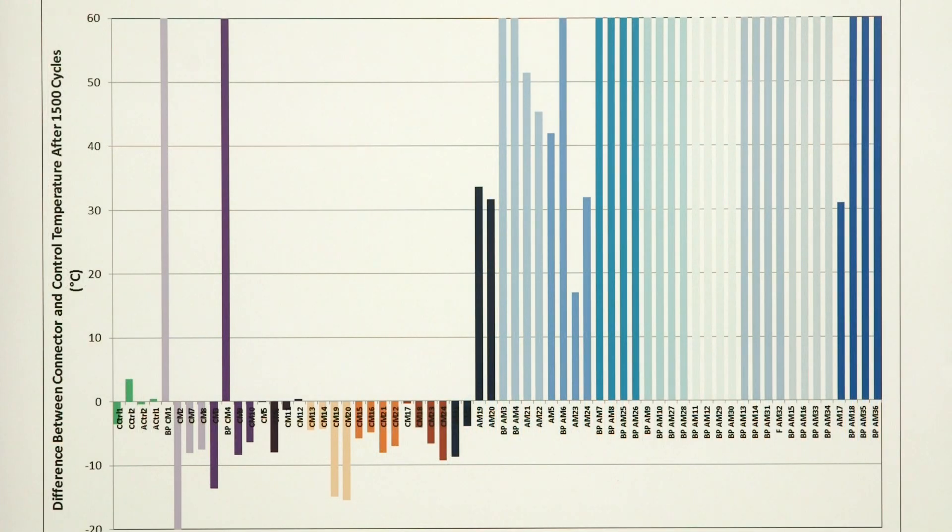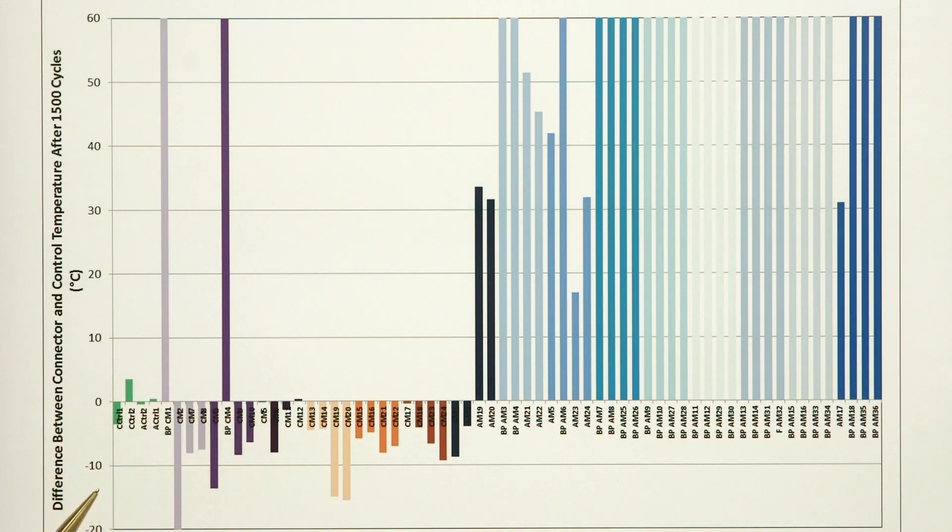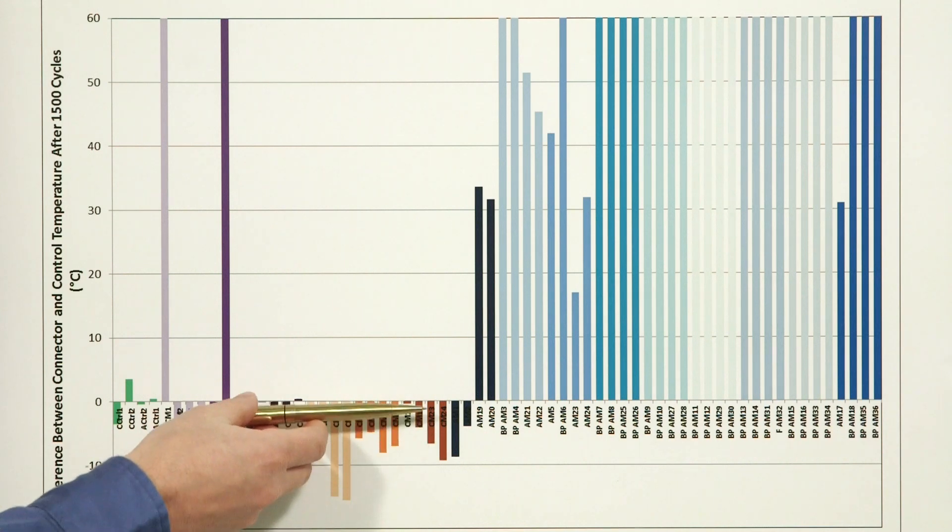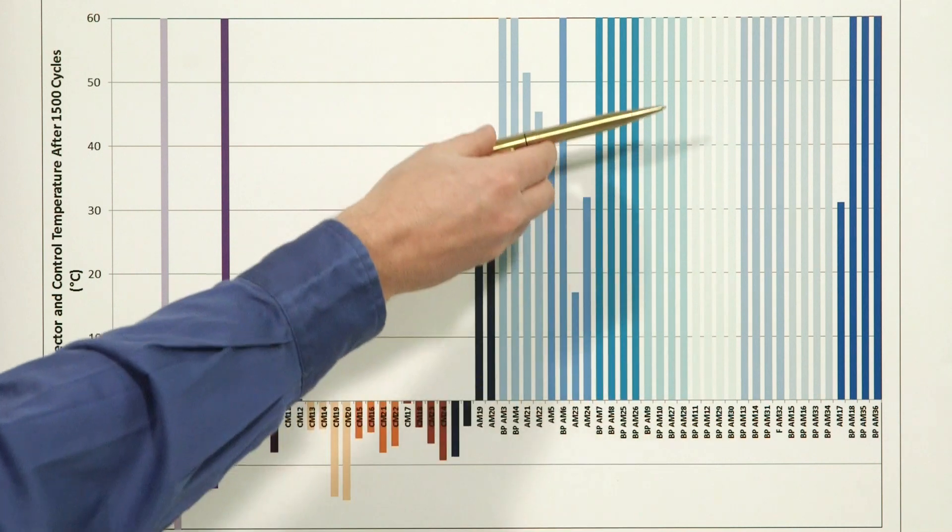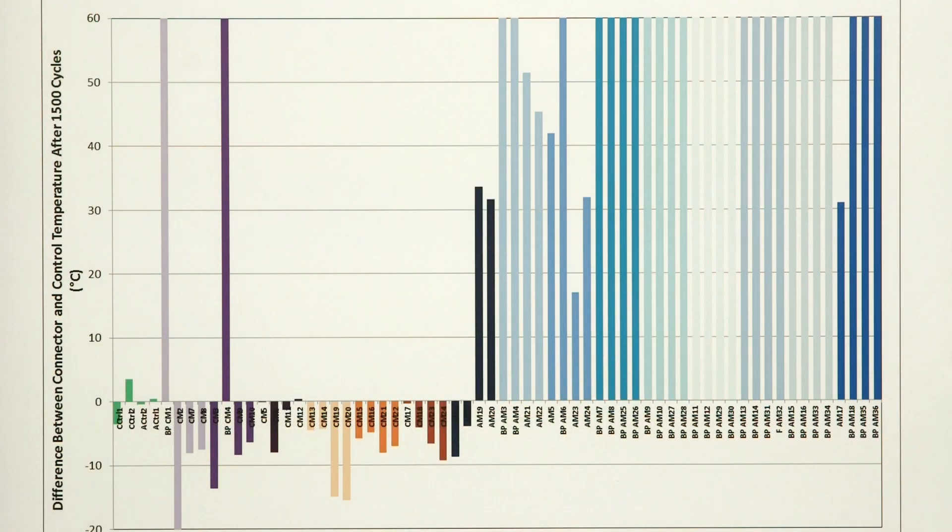Here we see in this chart again we have the temperature difference between the sample temperature and the control, except in this case this is the final value after the 1500 cycle test is complete. So here we see the majority of the samples that had copper wire with dual rated aluminum connectors are below the zero line, and all of the samples of the copper wire with copper connectors are below the zero line. And the majority of the samples that had aluminum wire with aluminum connectors are well above the line.